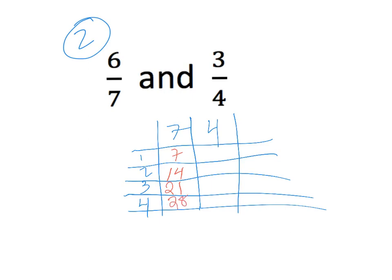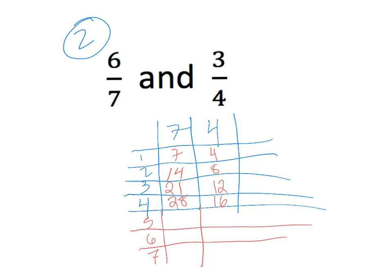Two times four is eight, three times four is twelve, four times four is sixteen. Let's extend this one out. Five times seven is thirty-five, six times seven is forty-two, seven times seven is forty-nine. Five times four is twenty, six times four is twenty-four, and seven times four is twenty-eight. So I can see my least common denominator is going to be twenty-eight.